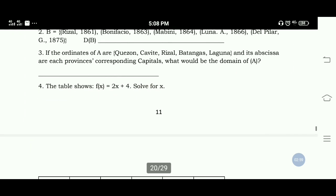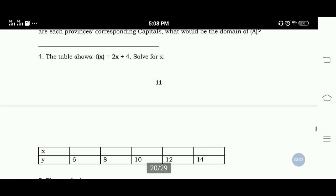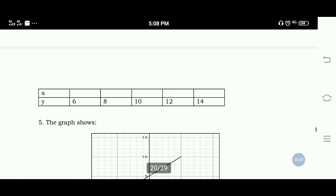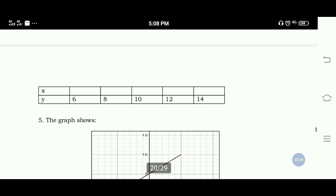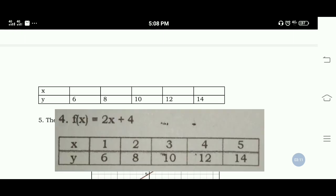Number 4: The table shows f(x) is equal to 2x plus 4. Solve for x. The values of x are 1, 2, 3, 4, and 5.